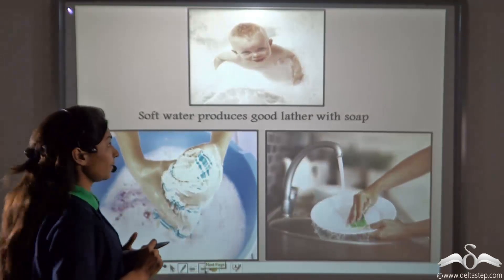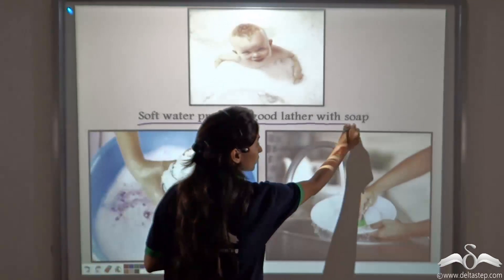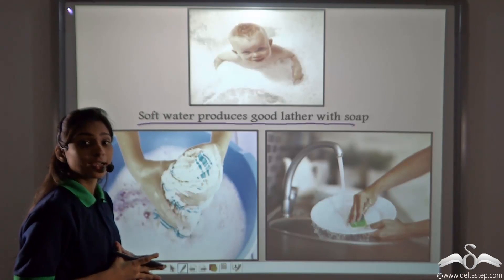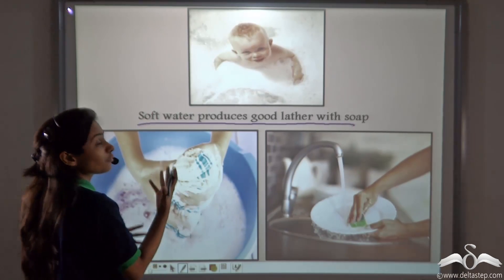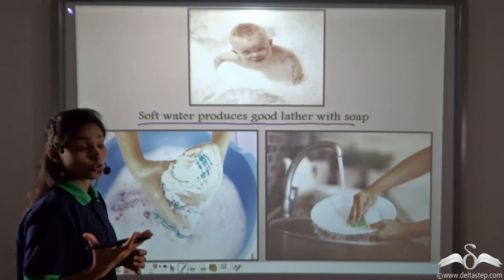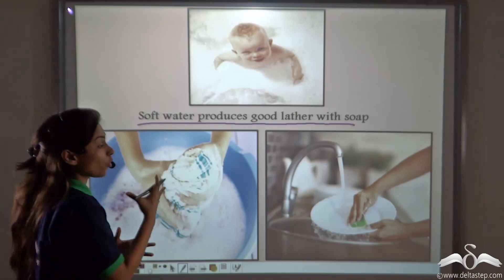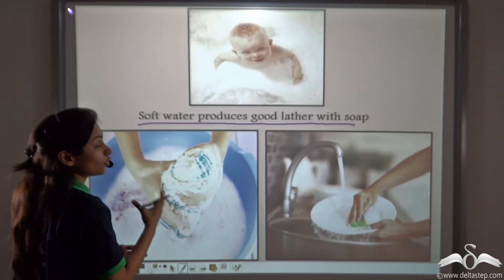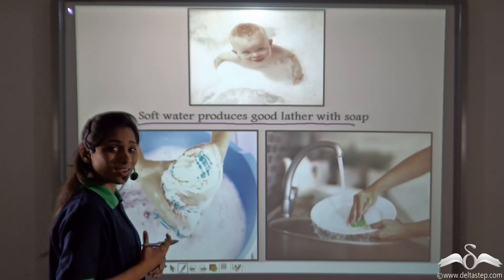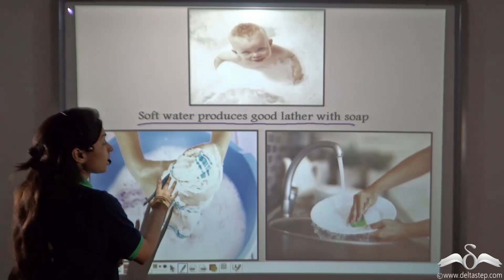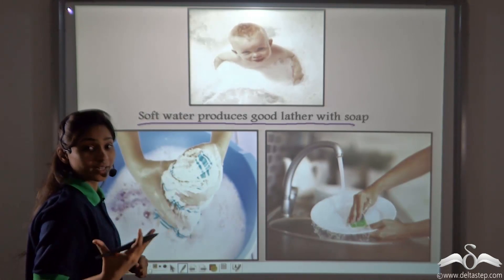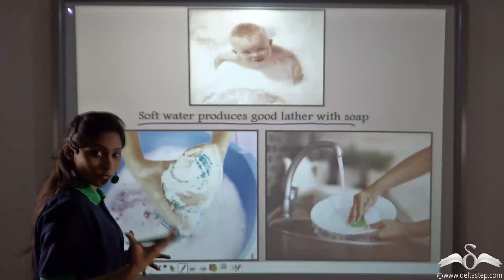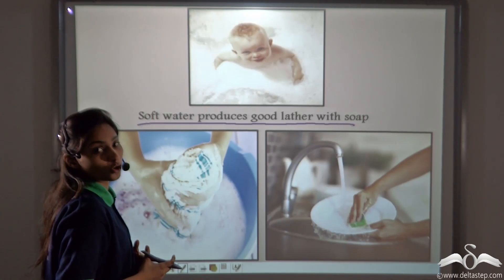Soft water produces a good lather with soap, and this is why most people use soft water for cleaning purposes — like bathing and washing clothes. Washing clothes in soft water gives a good amount of foam, and since certain minerals are absent in soft water, your clothes will not turn reddish. So washing clothes in soft water will increase the life of the clothes.